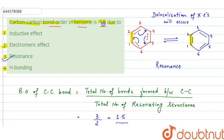So the reason behind the bond order of 1.5 is due to resonance, so option C is the correct answer. No other effect is operating in the benzene ring — there is no inductive effect, no electromeric effect, no hydrogen bonding. Due to resonance, the bond order is 1.5, so option C is the answer. Thank you.